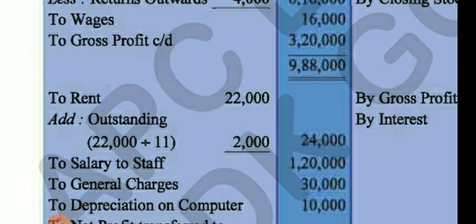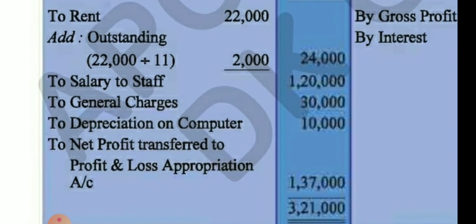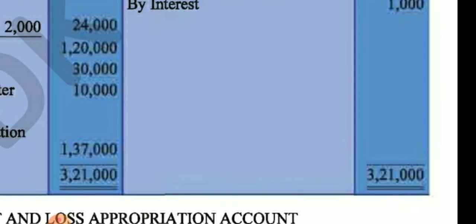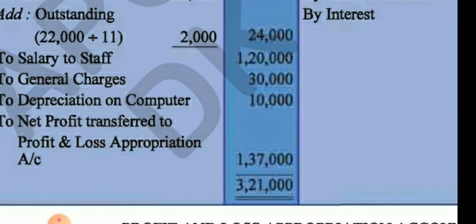Interest ₹1,000. On the expenses side in P&L: rent is ₹22,000 for 11 months; one month is outstanding as per adjustment. So divide by 11 — one month is ₹2,000 — add ₹2,000 outstanding, total rent ₹24,000. Staff salary ₹1,20,000, journal charges ₹30,000, depreciation on computer ₹10,000.